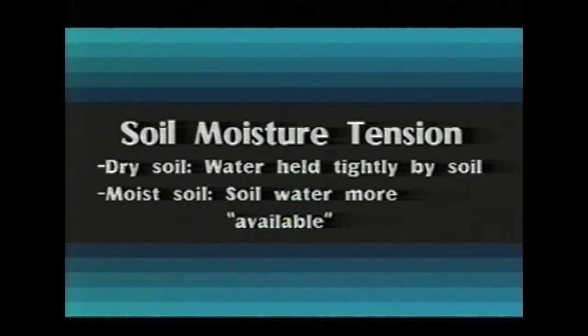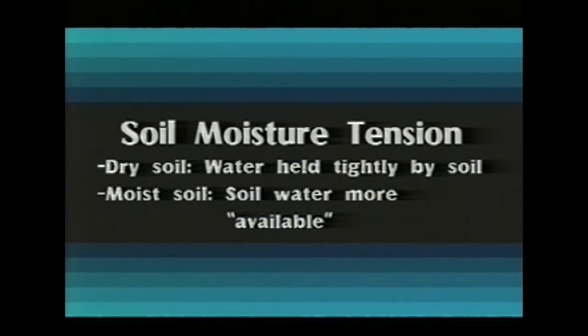Soil moisture tension deals with the tightness that the soil holds water at a certain moisture content, and it's a function of that moisture content. If you have a dry soil, the water in the soil at that moisture content is held quite tightly and is not readily available for plants to use. If you get a moist soil - one you've just irrigated - and you wanted to extract some of the water out, you would find it's not very difficult. A dry soil has a large tension, expressed as a large negative number, while a moist soil has a rather small tension. In a moist environment, if the water is readily available, plants will use more water and won't be restricted in their water use.